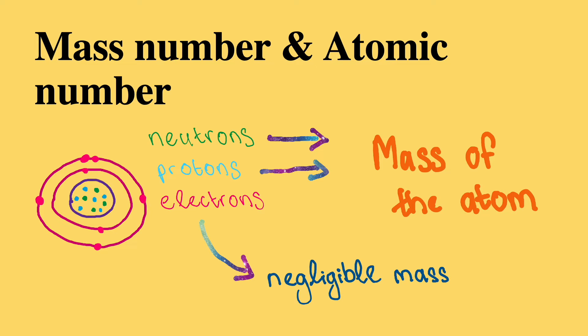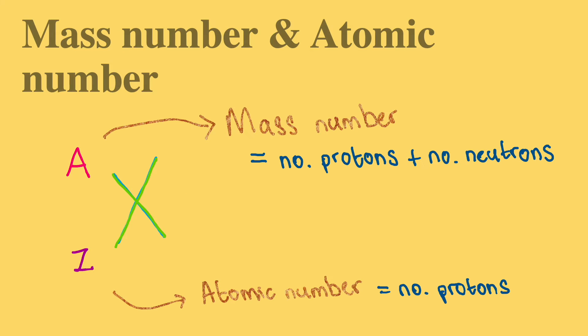As you may already know, every atom has subatomic particles: neutrons, protons and electrons. Out of these particles, the neutrons and protons contribute greatly towards the mass of the atom. The mass of an electron, on the other hand, is negligible when compared to that of a proton or neutron.